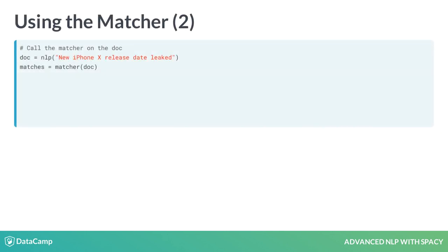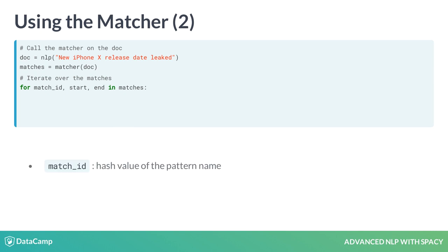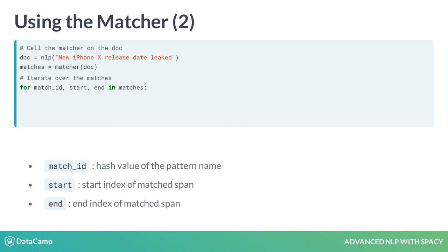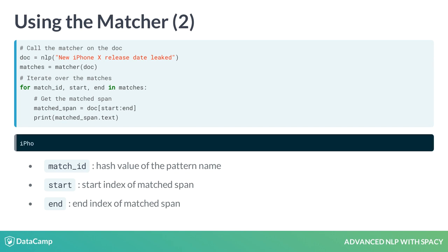When you call the matcher on a doc, it returns a list of tuples. Each tuple consists of three values: the match ID, the start index, and the end index of the matched span. This means we can iterate over the matches and create a span object — a slice of the doc at the start and end index.